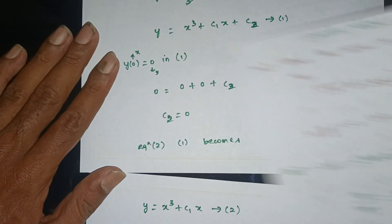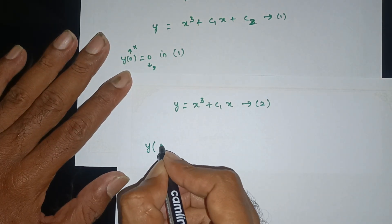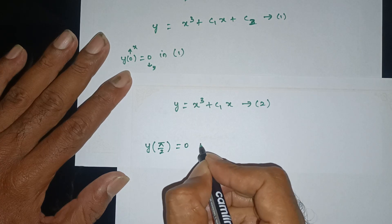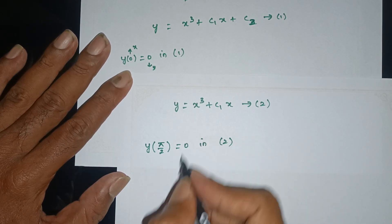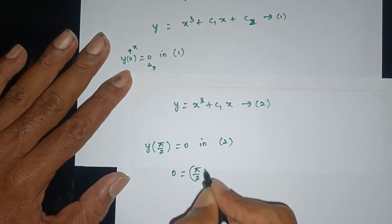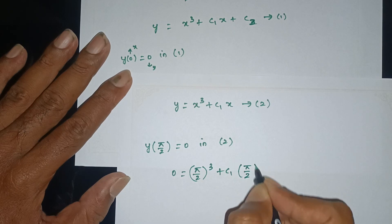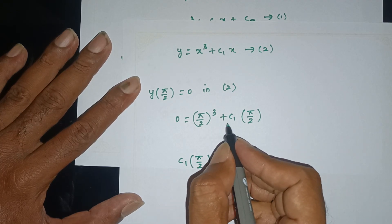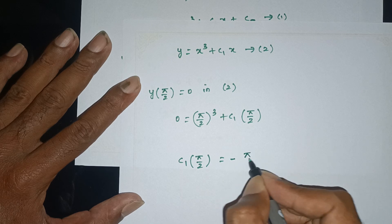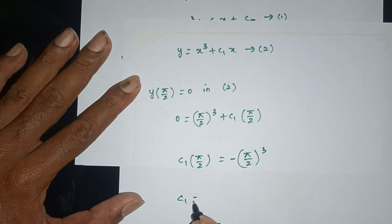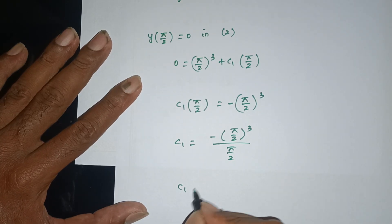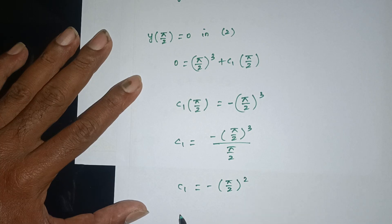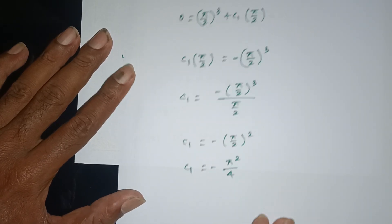Applying the second boundary condition y(π/2) = 0: (π/2)³ + C₁·(π/2) = 0. Therefore C₁·(π/2) = −(π/2)³, which gives C₁ = −(π/2)³ / (π/2) = −(π/2)² = −π²/4.